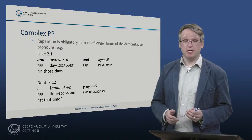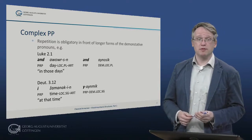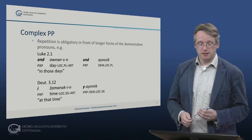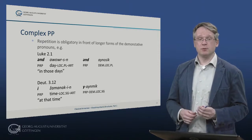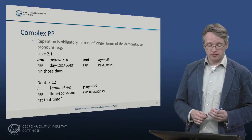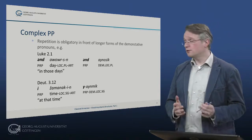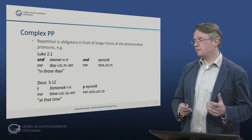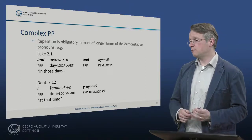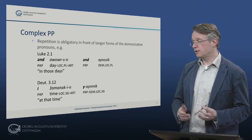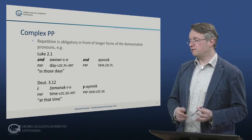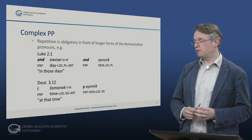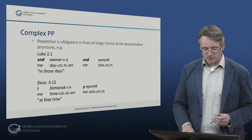Repetition is obligatory actually in front of longer forms of the demonstrative pronouns. So for example und awursen und einusik — 'in those days' — this is a repetition of und before the two elements, and it seems to be obligatory in the case with einusik. Similarly, in Deuteronomy, we have e jamanakin jain mik, where also with this longer form of the demonstrative pronoun, the preposition e is repeated before the two elements of the phrase.